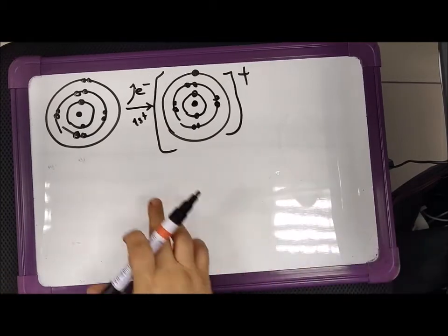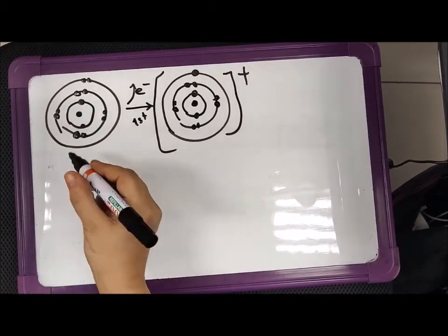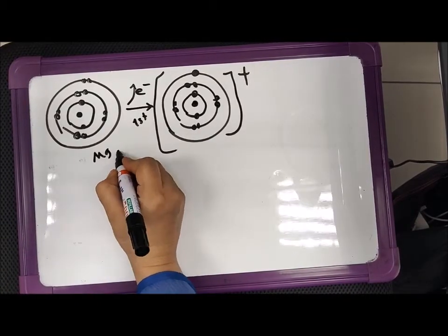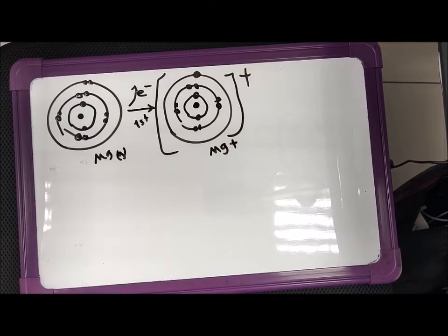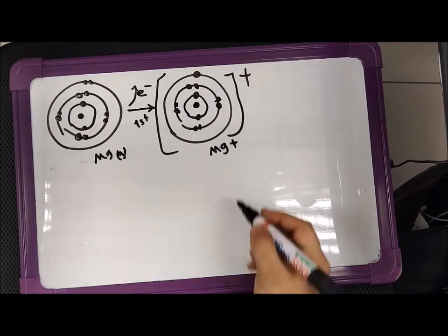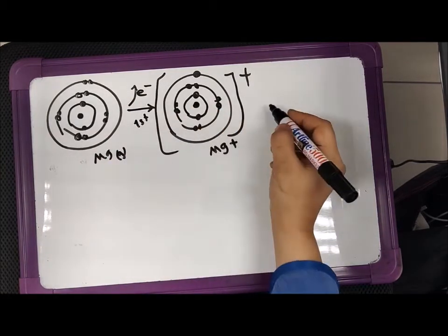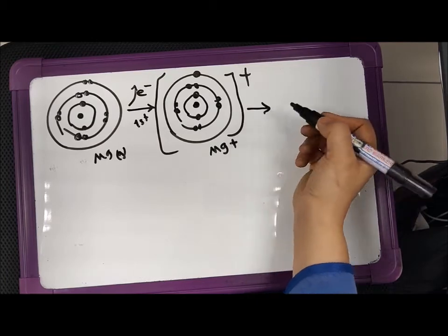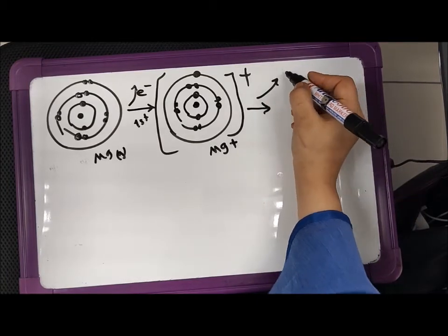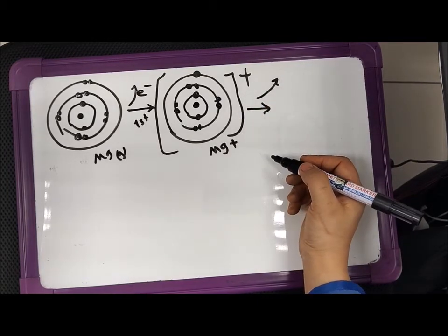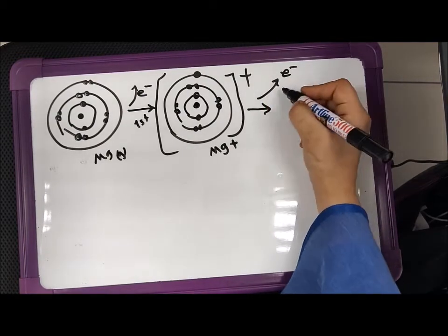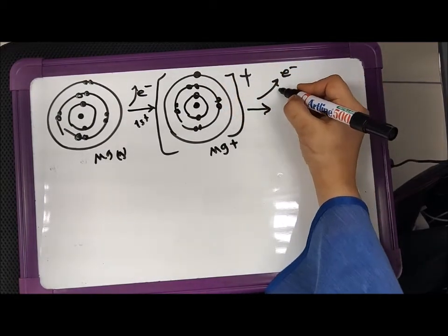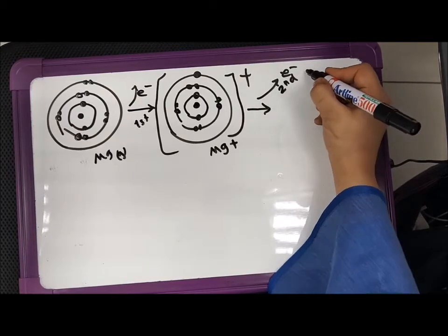So this is the first ionization energy — Mg in a gaseous state changed into the Mg positive ion in the gaseous state. Once you have removed one electron, you can continue removing more electrons from it. This is called successive ionization energy. The second electron which is removed from the outer shell is called the second ionization energy.